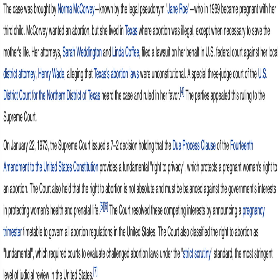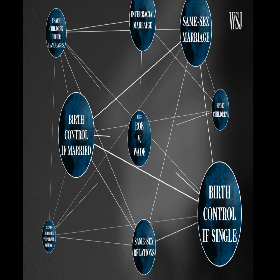She wanted an abortion, but at the time where she was staying, abortion was illegal. Her attorneys decided to fight a lawsuit in the U.S. federal court against Henry Wade, alleging that Texas abortion laws were unconstitutional. On January 22nd, 1973, the Supreme Court issued a 7-2 decision that provided a fundamental right to privacy, which protected a woman's right to abortion. The court also held that the right to abortion is not absolute and must be balanced against the government's interest in protecting women's health and prenatal life.